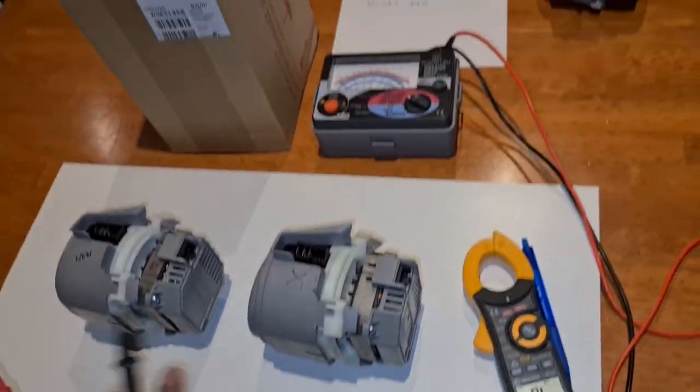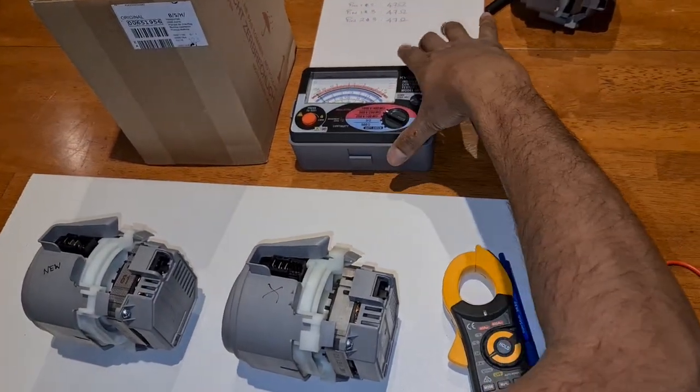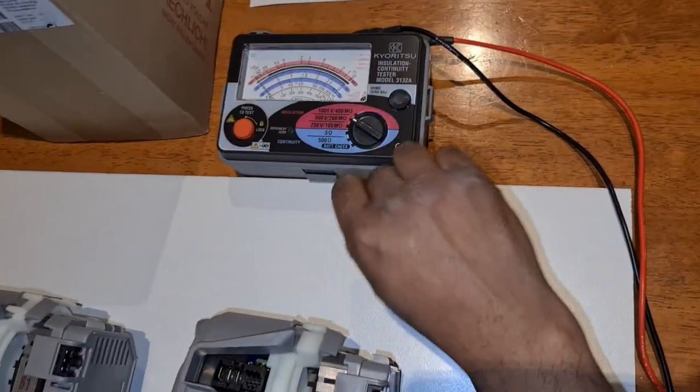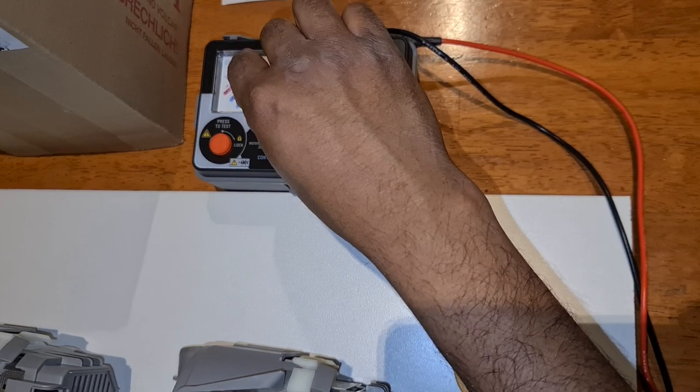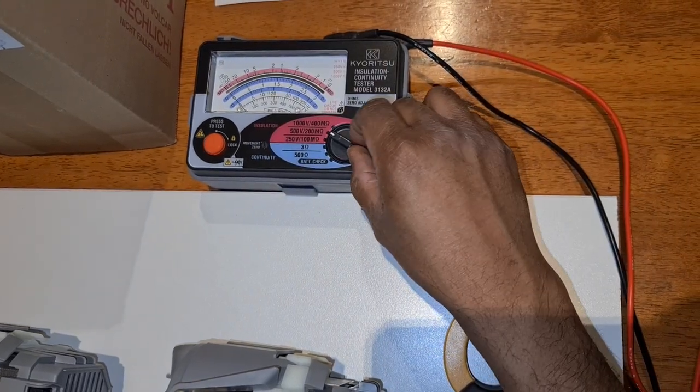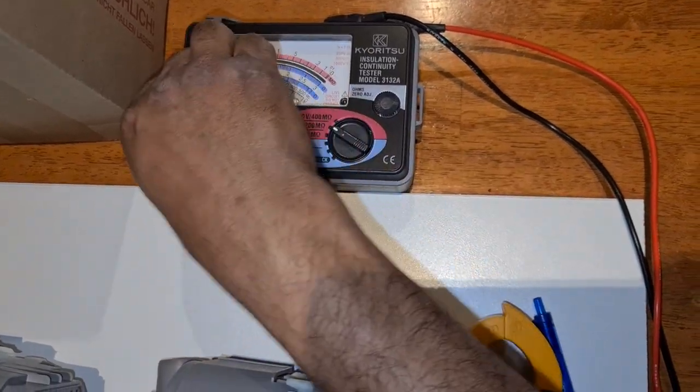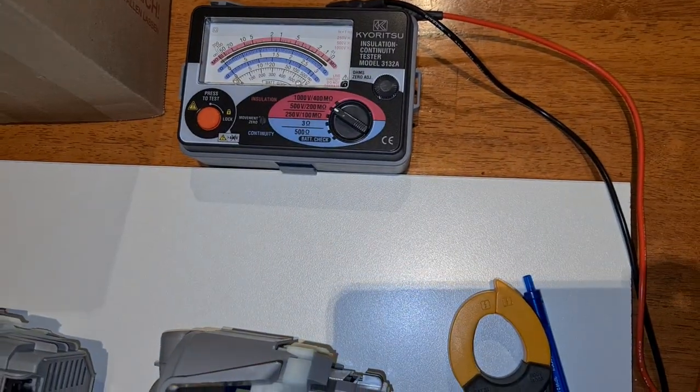So here we use another device. I use a Kyoritsu Insulation Continuity Tester to test the insulation resistance. Now we set the instrument at 500 volts, 200 mega ohms, and turn the yellow knob to the lock position.